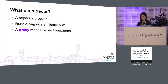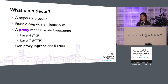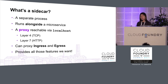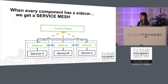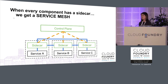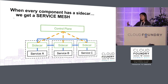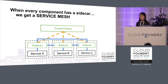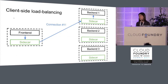A sidecar is a separate process that runs alongside a microservice. It's a proxy the app can reach via localhost, handling both layer 4 and layer 7 traffic. The sidecar proxies both ingress — traffic coming into the container — and egress — traffic going out. In its ideal form the sidecar provides all the features we want. When every component has a sidecar, we get a service mesh: an infrastructure layer between your services and the network, with a unified control plane talking to each sidecar, ensuring consistent features without the quirks of in-process libraries.